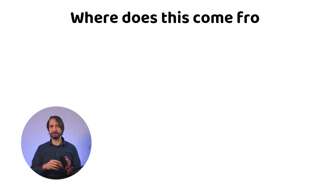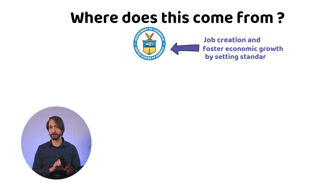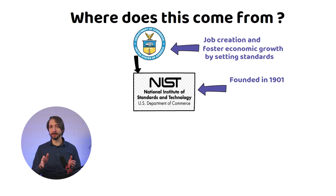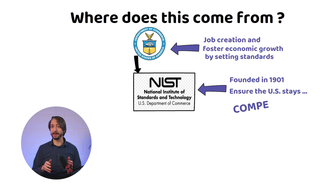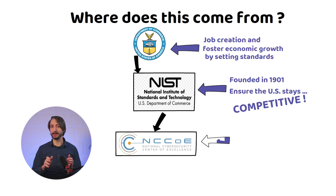Where does this all come from? On the top we have the US Department of Commerce, whose main purposes include job creation, fostering economic growth, and innovation by setting standards. The National Institute of Standards and Technology, NIST, was founded in 1901 and is now part of the US Department of Commerce — established because US industry competitiveness was behind rivals such as the UK and Germany. Their mission is to promote US innovation and industrial competitiveness through science, standards, and technology. The National Cybersecurity Center of Excellence, NCCoE, is part of NIST and is leading the development of the Zero Trust Architecture.